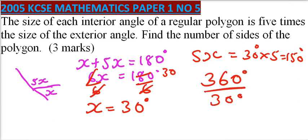And this we should be able to get, that is to give us 12. So this implies that it has 12 sides. So that's how you work that out.